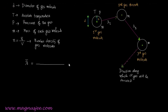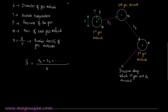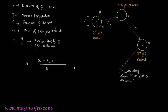The mean free path of the gas molecule is denoted by lambda bar, which is equal to (lambda 1 + lambda 2 + lambda 3 + ...) divided by N, the number of gas molecules. That is, mean free path is defined as the average distance travelled by the gas molecule between two successive collisions — the sum of all distances travelled between different collisions divided by N.